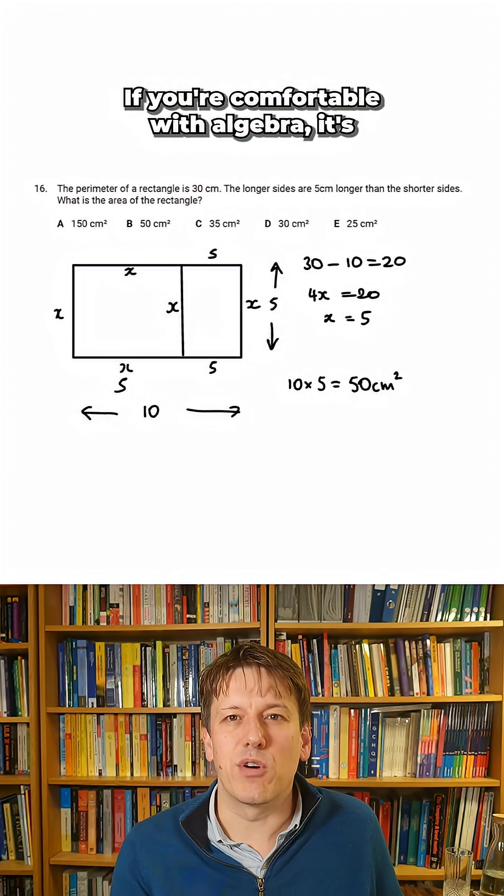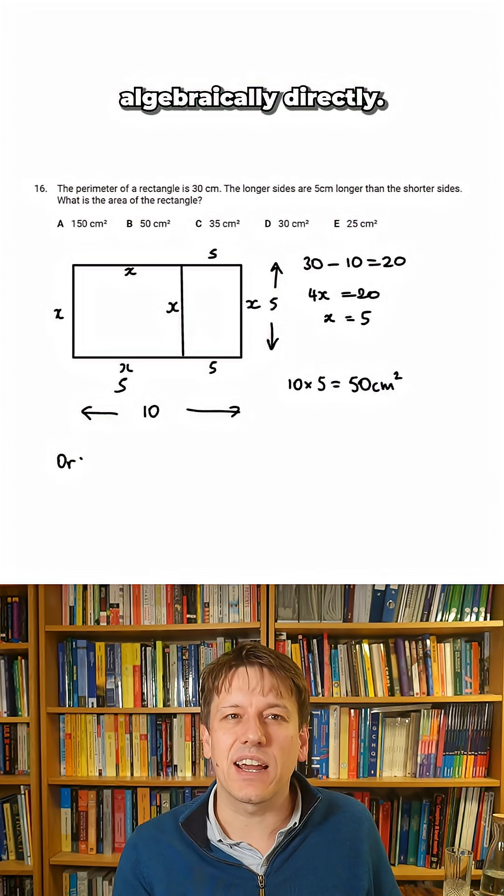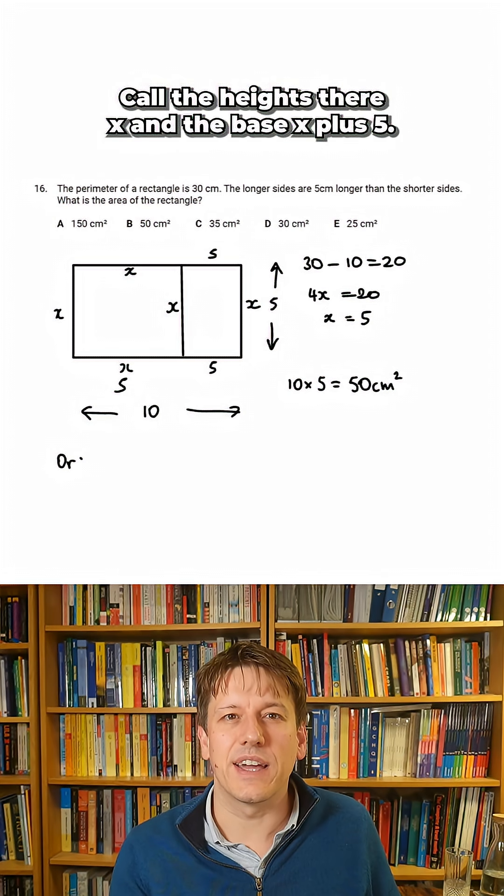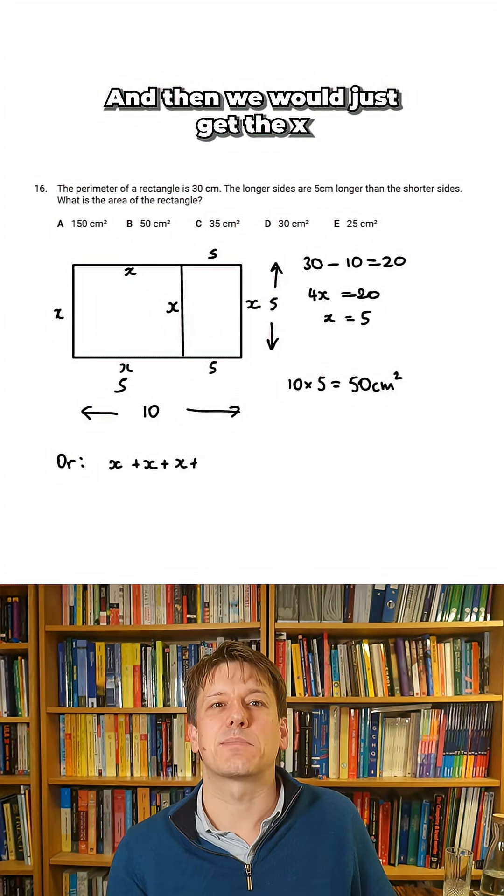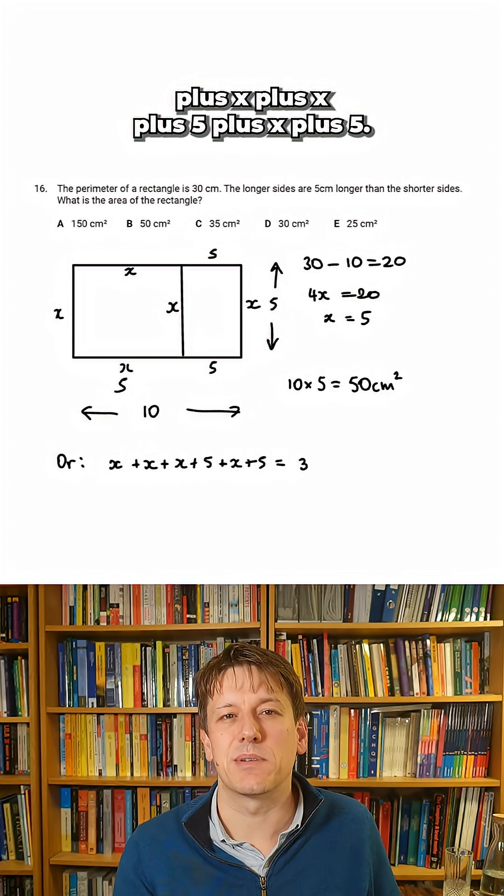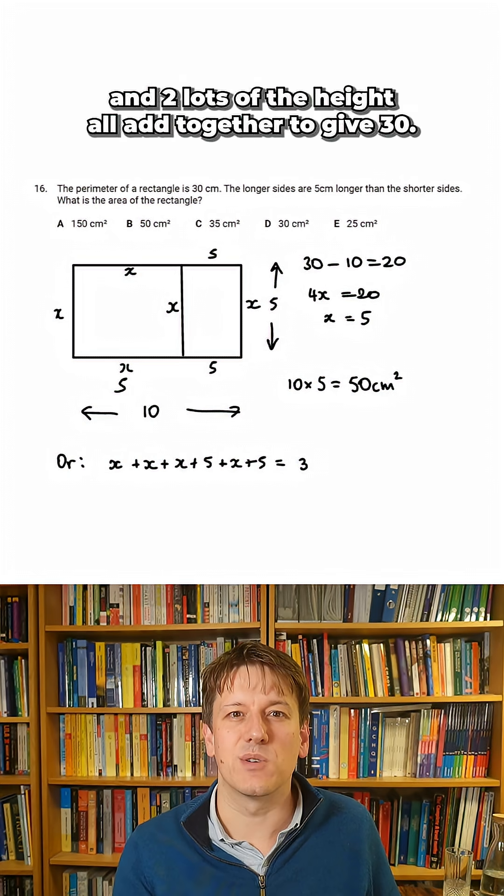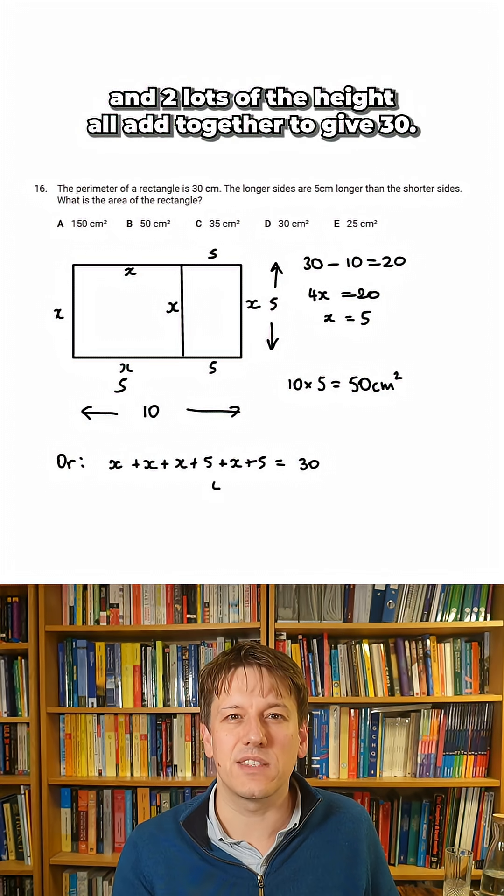If you're comfortable with algebra, it's probably quicker just to write it down algebraically directly, call the height there X and the base X plus 5, and then we would just get the X plus X plus X plus 5 plus X plus 5, and that's two lots of the base and two lots of the height, all add together to give 30.